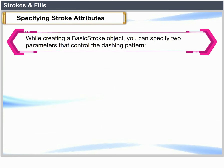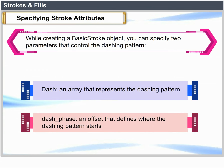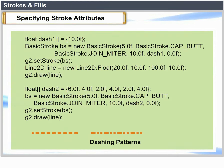While creating a BasicStroke object, you can specify two parameters that control the dashing pattern: dash, an array that represents the dashing pattern, and dash_phase, an offset that defines where the dashing pattern starts. The dashing patterns are explained in the diagram.